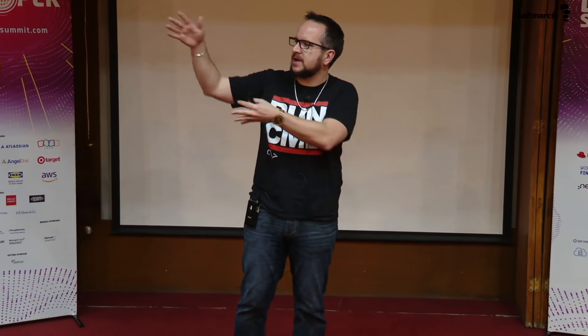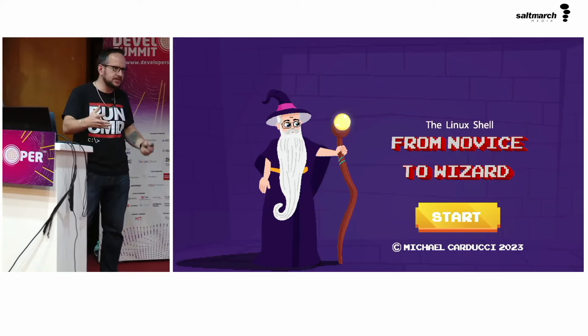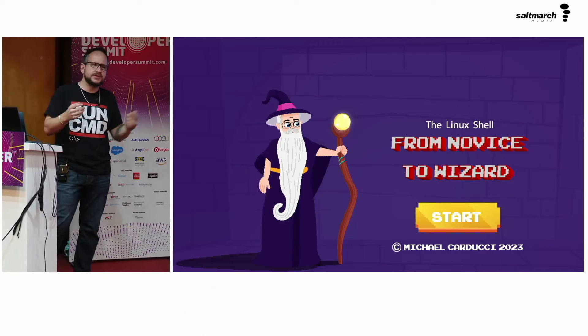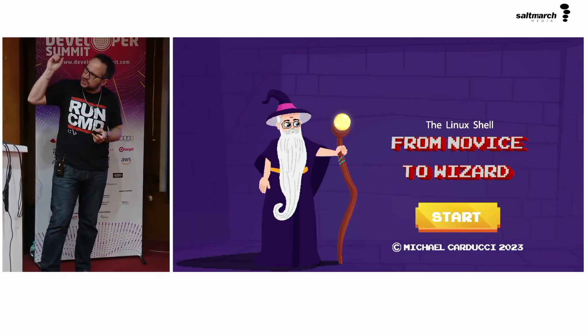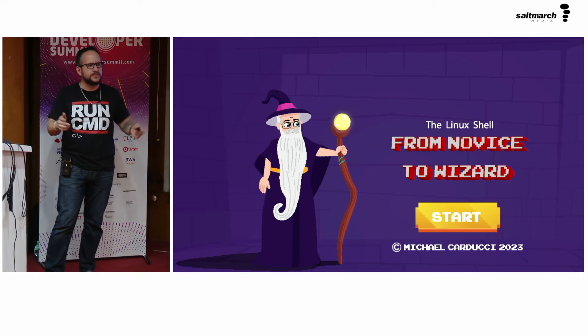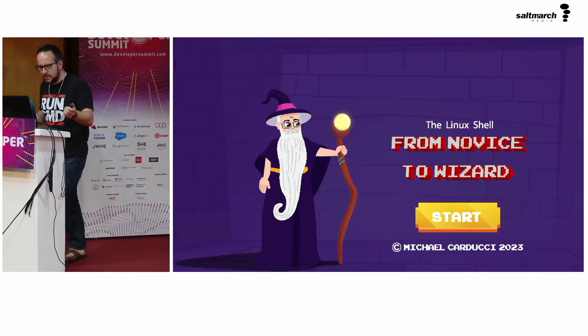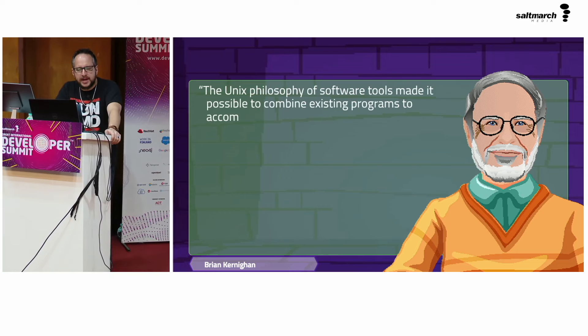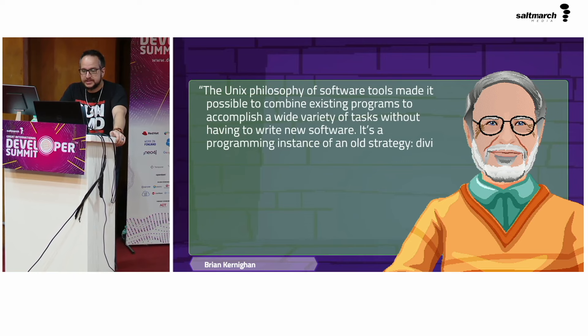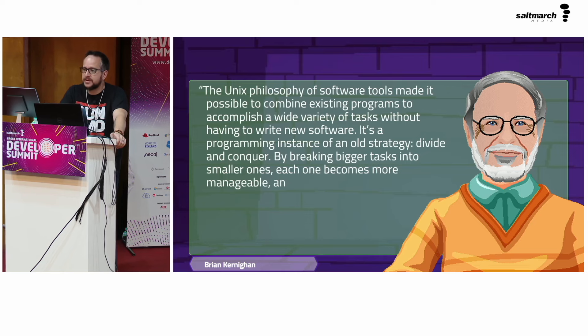Magic is interesting because you learn one little move and that alone doesn't make you a magician. Over time you get pieces you can start putting together in different ways — a couple of moves, a couple of principles — and before you know it everybody in the room is sitting on a six of clubs. It's the same kind of thing with Unix, Linux, bash, and these shells. Each command is like an individual spell; when you start putting them together you can conjure entirely new realities at will. To quote Brian Kernighan: the Unix philosophy of software tools made it possible to combine existing programs to accomplish a wide variety of tasks without writing new software — divide and conquer.